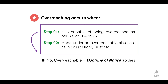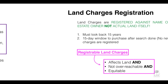Considering this, think about where an equitable right becomes subsisting. It must be either registered in the Land Charges Registry; if not, then it must be overreached; where that is also not applicable, there must be some form of doctrine of notice. So, where it is not overreachable, the doctrine of notice applies.